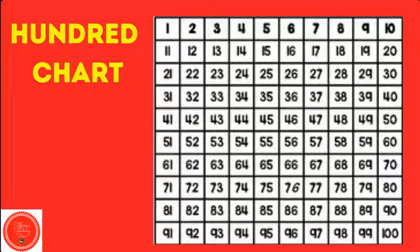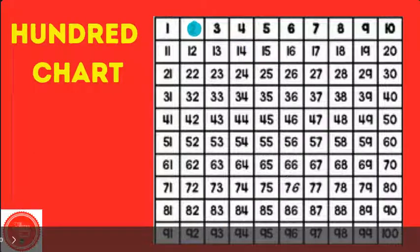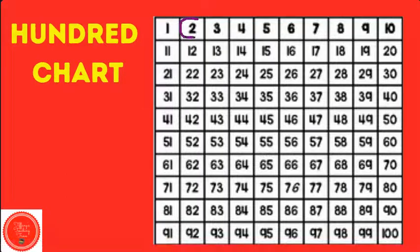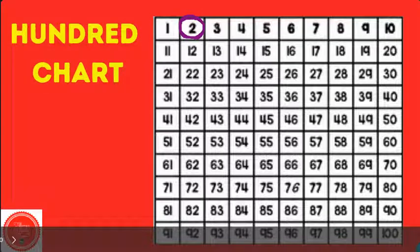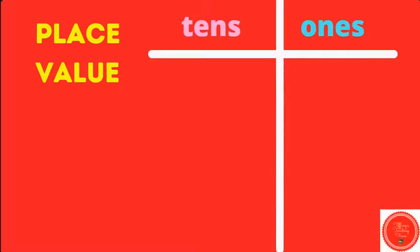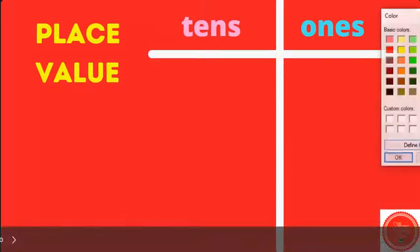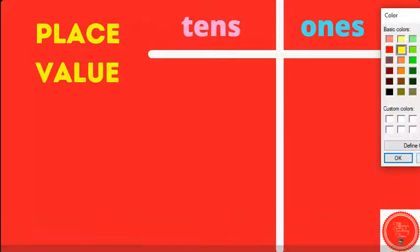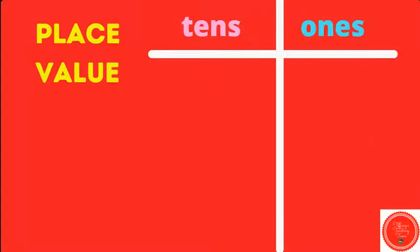Let's find two on the 100 chart. It's all the way at the top — two. Let's talk about place value. In the number two, there aren't any tens, but there are two ones.